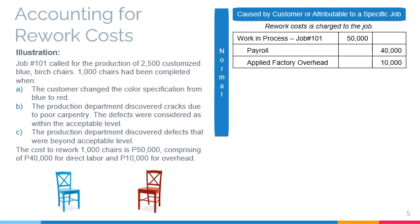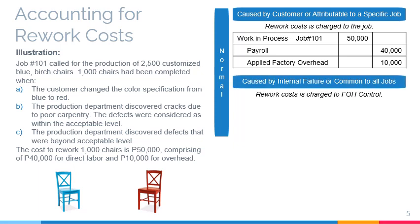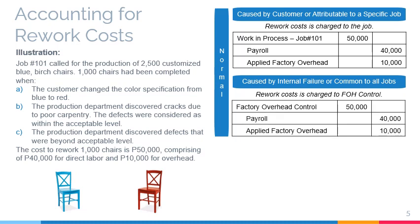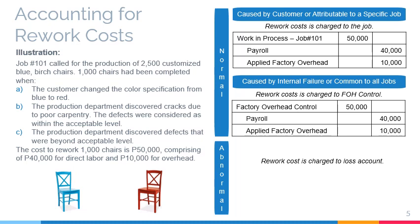In Scenario B, the rework is due to poor carpentry. Rework that is due to internal failure or one that is common to all jobs is charged to factory overhead control at cost less disposal value. This time, factory overhead control is debited instead of work in process. In Scenario C, the rework was considered abnormal. Abnormal rework is charged to a loss account at cost less disposal value. Hence, loss from abnormal rework is debited.